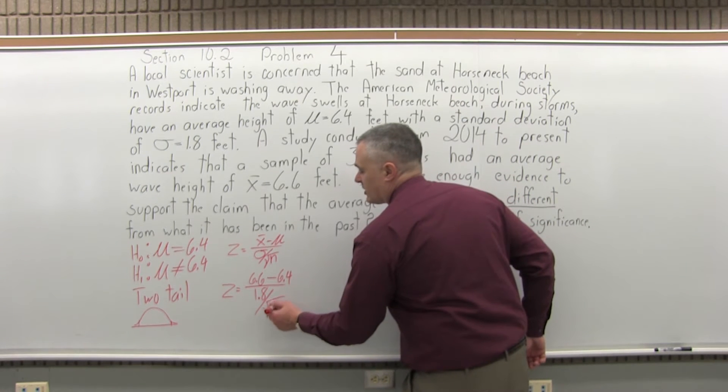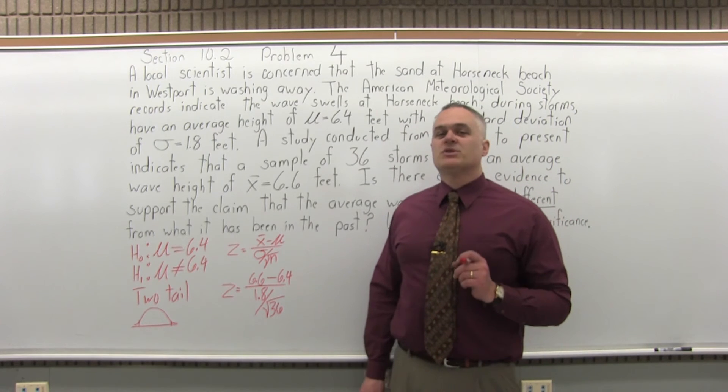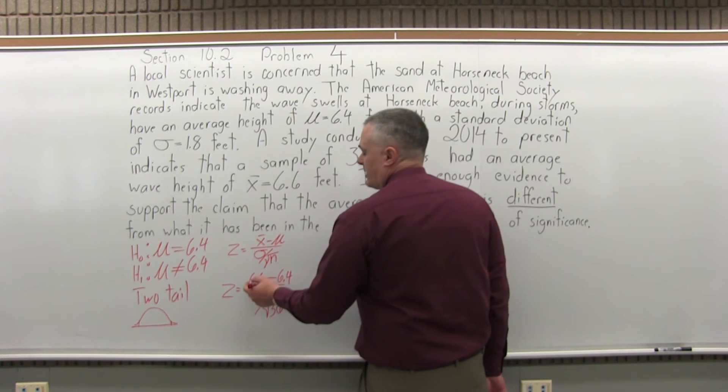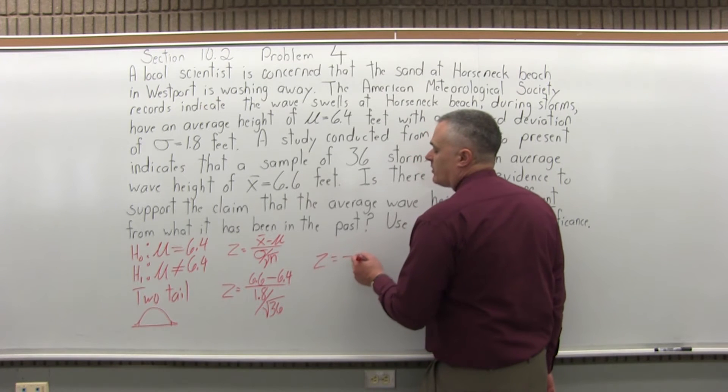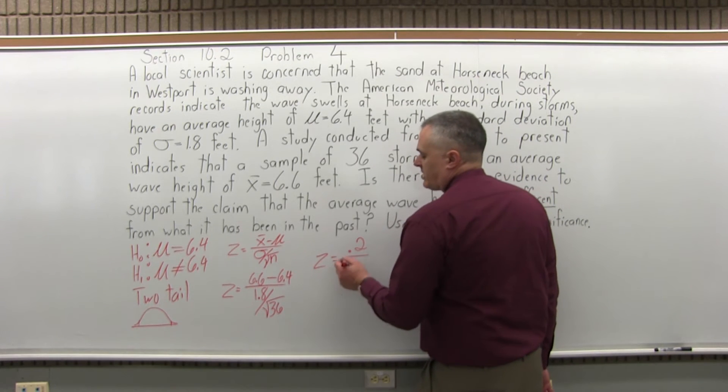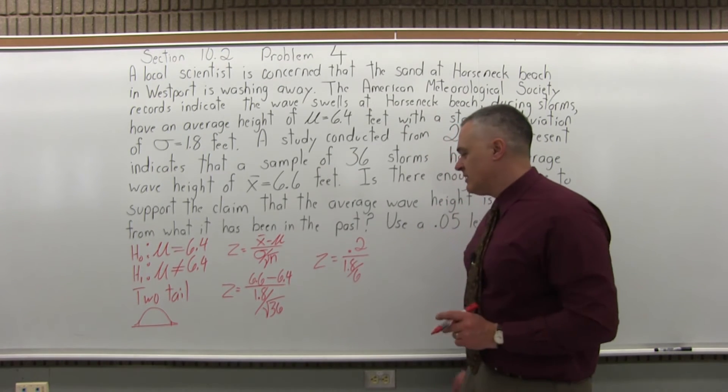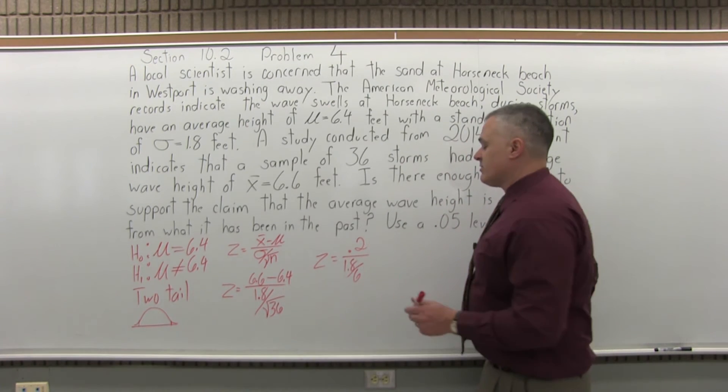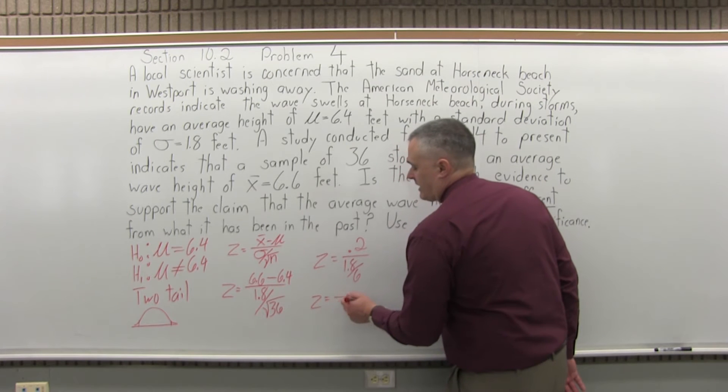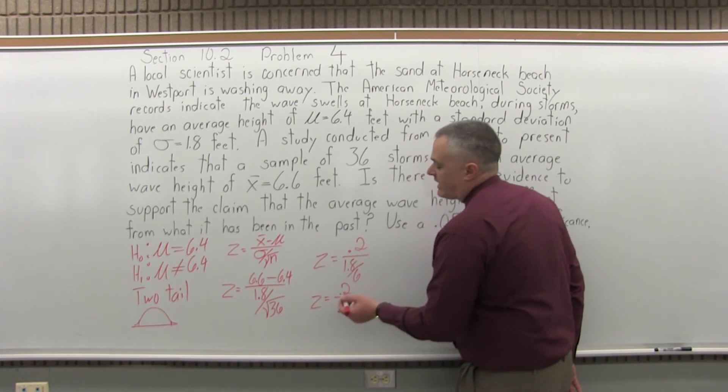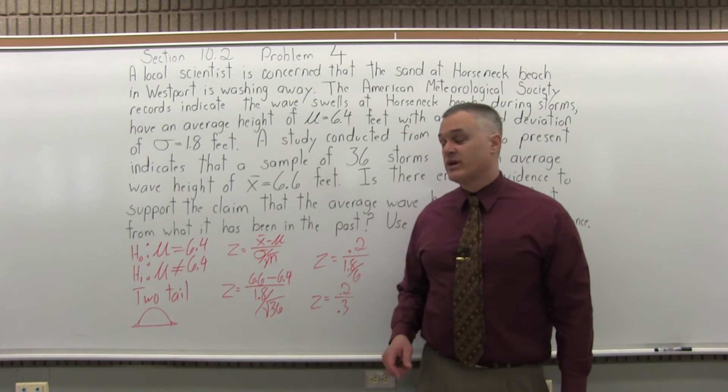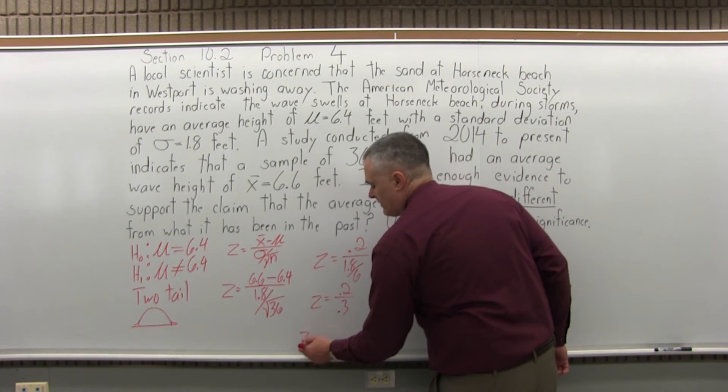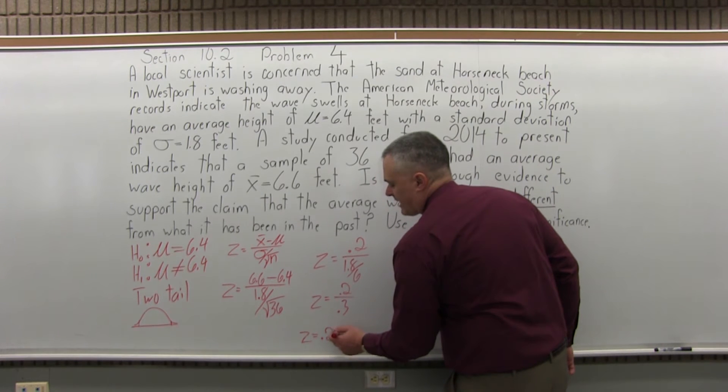Don't forget the square root. That's a fairly common mistake. It's not just 36 in the denominator, but square root of 36. So now let's start working on that computation. In the numerator, 6.6 minus 6.4 will be positive 0.2. And in the denominator, I'm going to have 1.8 over 6. Let me deal with that square root right away. So square root of 36 is 6, because 6 times 6 is 36. And let me simplify the denominator a little bit. I'm going to have 0.2 in the numerator. So 1.8 over 6 is 0.3.